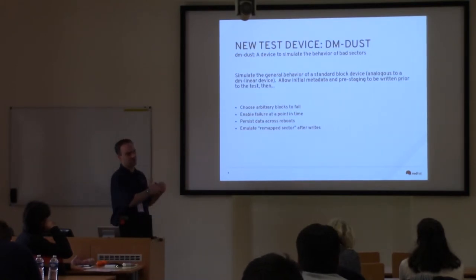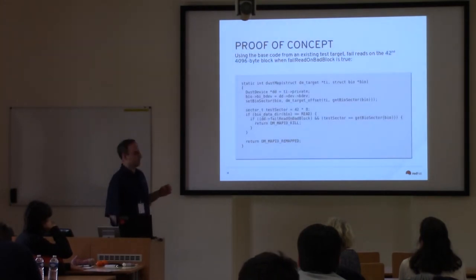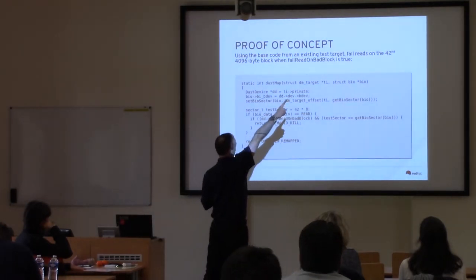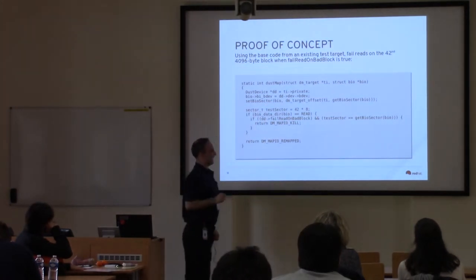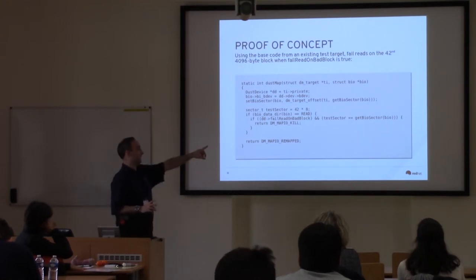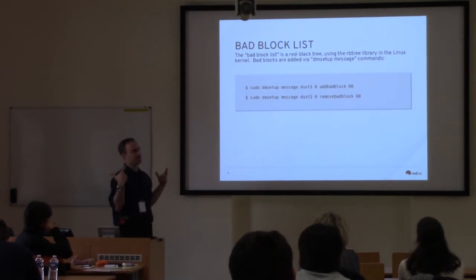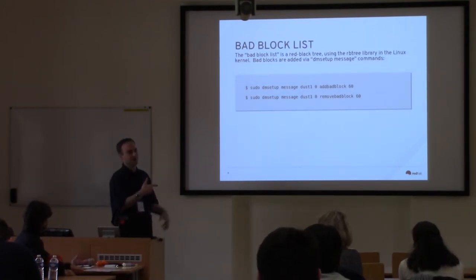There was an interface in these test targets where you can send a message as a command input to the target. So I started a proof of concept. Basically, if the test sector is 42 and it's a read, and failing is enabled on the bad block, then return DM_MAPIO_KILL to simulate a failure — but only if the device is enabled. Later, I was able to find somebody working on one of the other in-tree test targets and share the idea.